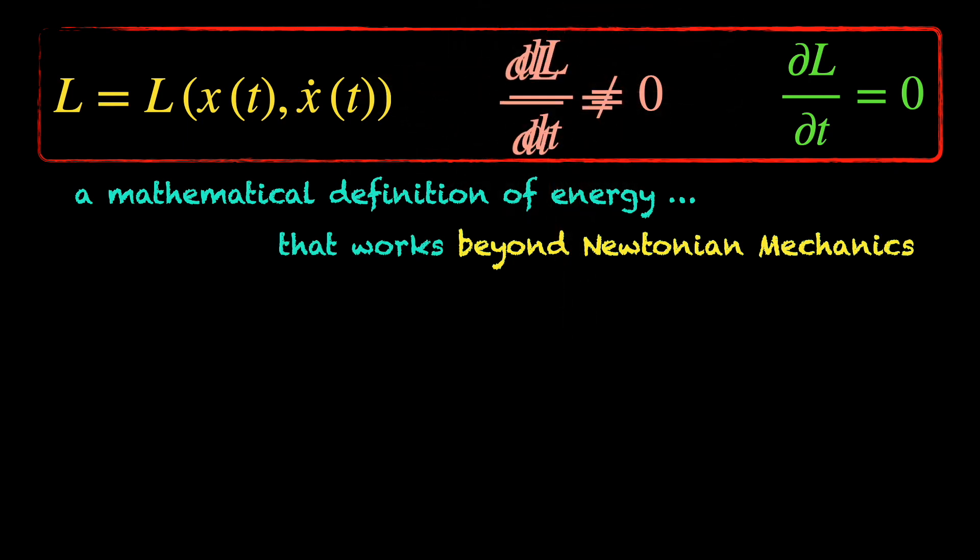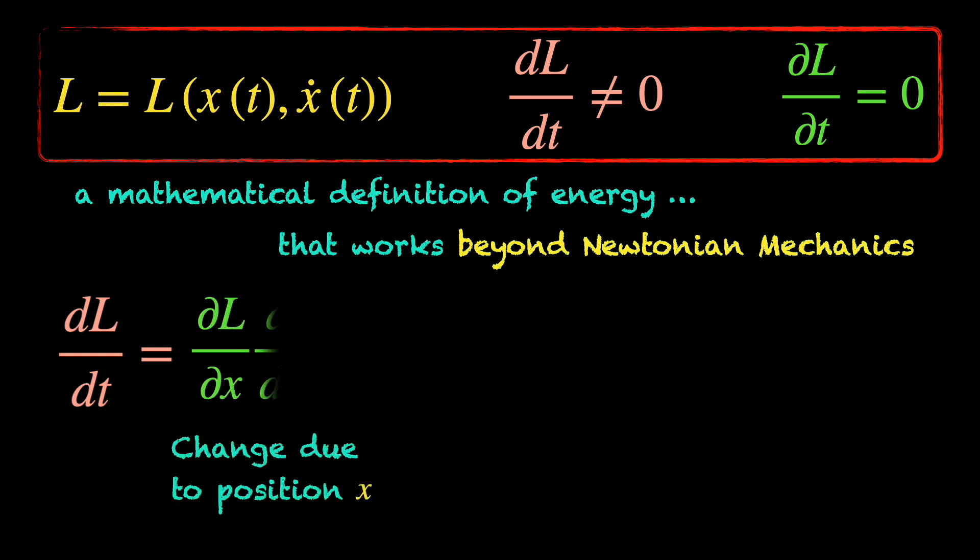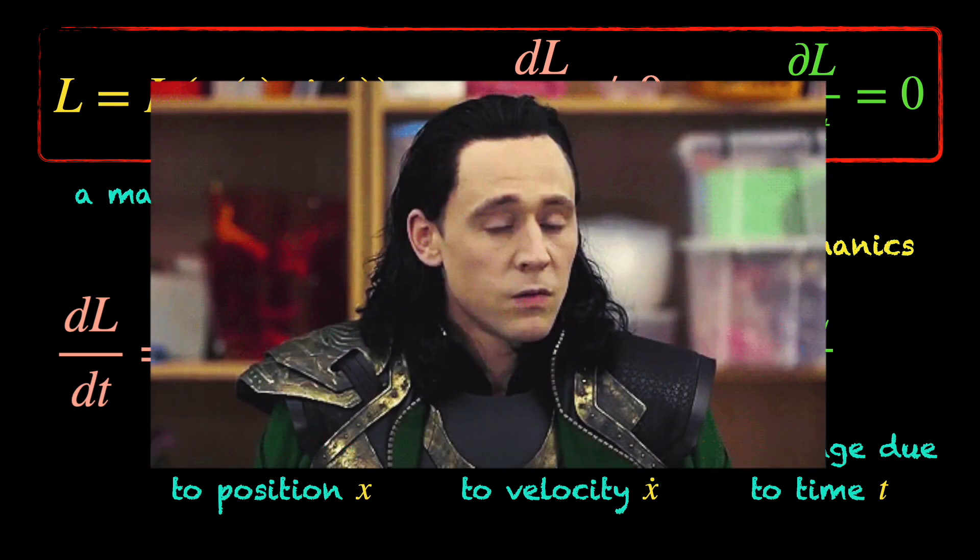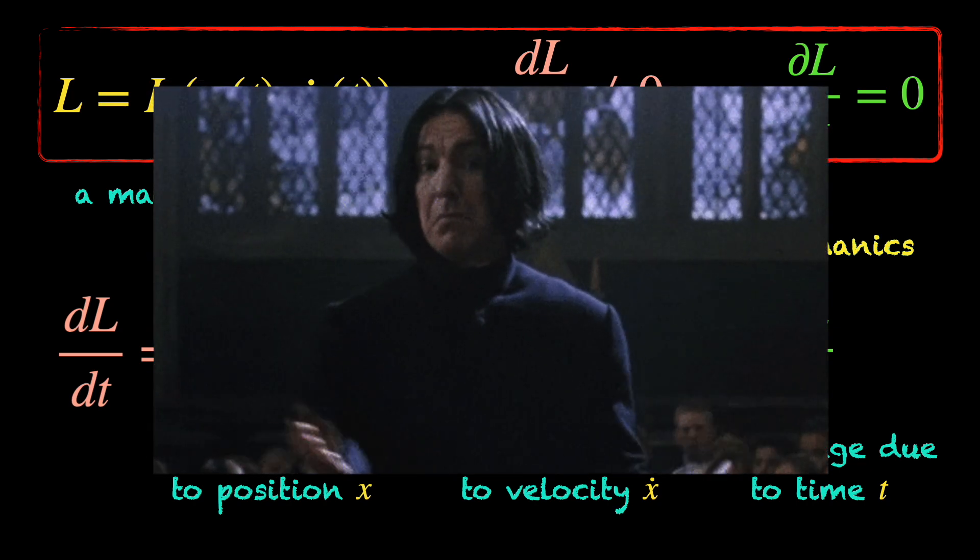The total derivative of the Lagrangian with time in general should have contributions of three kinds. Change of the Lagrangian due to the change of position with time, that is del L del x times d dt of x. Plus, change of the Lagrangian due to the change of velocity x dot with time, that is del L del x dot times d dt of x dot. And finally, change of the Lagrangian due to the change of time itself, that is del L del t. This is simply the chain rule of partial derivatives taught in elementary calculus.